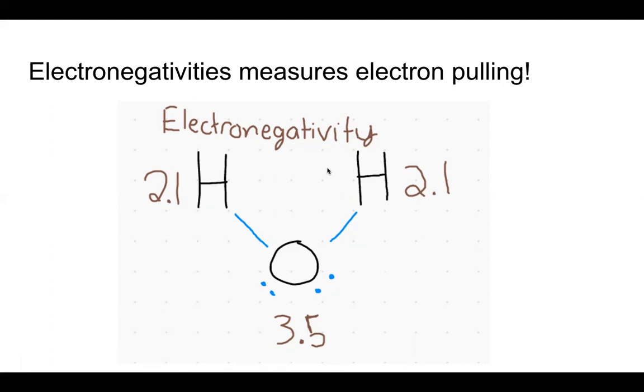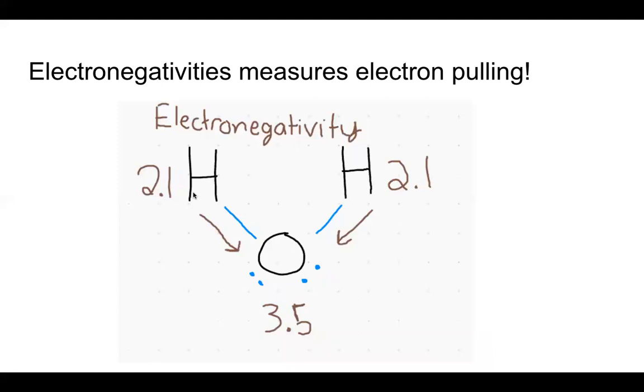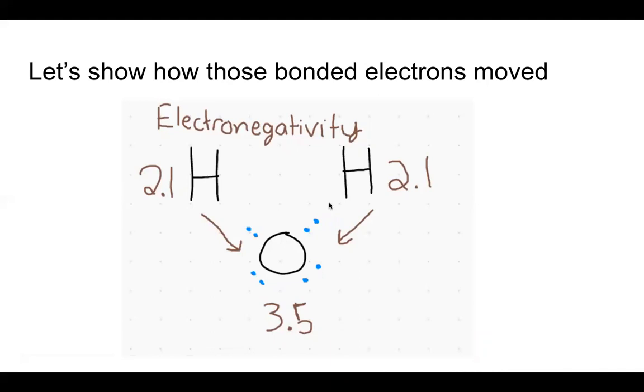That's a polar bond, but that is the previous learning goal. We're not going to worry about that right now. So when we think about which way it's getting pulled, the electrons, because it's talking about how much the electrons are getting pulled, the electrons are getting pulled towards the oxygen because 3.5 is stronger. So look, what I just did is I replaced the line that was representing the two electrons, and I put back in the two electrons from the bond.